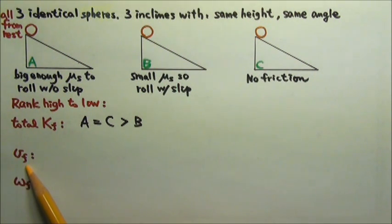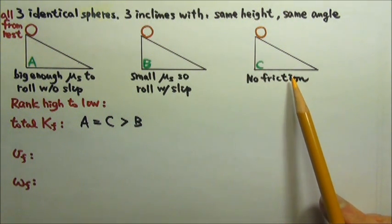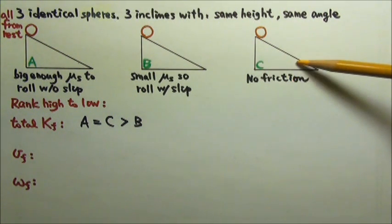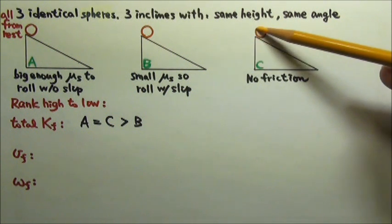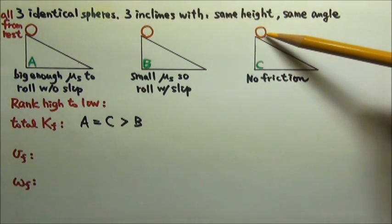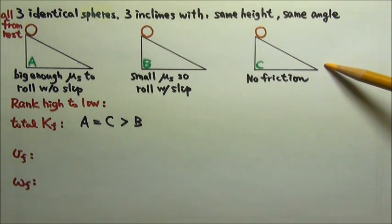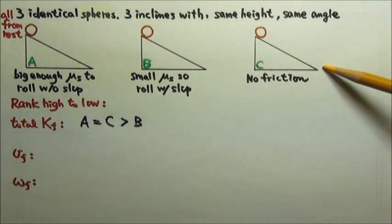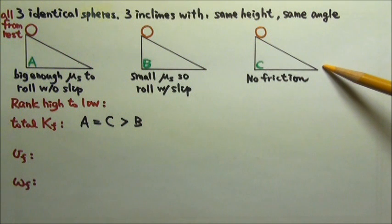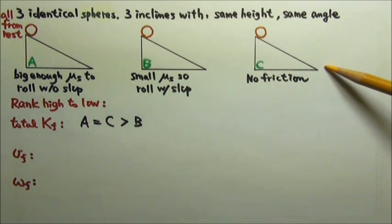As for the speed at the bottom of the incline, C has the fastest speed because there is no friction. The sphere is not going to roll at all — it's just going to slip all the way down. That means all of the Mgy is going to turn into translational kinetic energy only, since there is no friction to provide torque and therefore no rotational motion. So the linear speed for C should be the highest at the bottom of the incline.